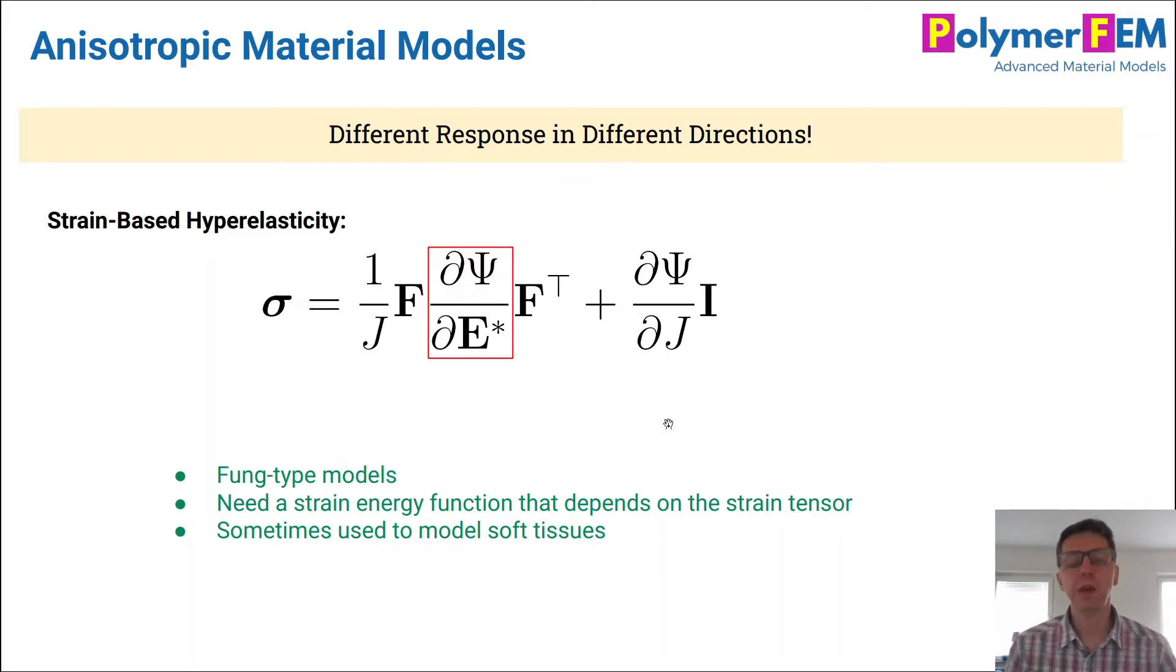Another way to formulate an anisotropic hyperelastic model is to use the form that's shown here. This is a form where the stress is dependent on this partial derivative of the strain energy density, but with respect to the strain itself, the strain tensor. So this is what's used in the Fung type material models. Some people like this and it's used for soft tissue modeling often. I don't usually use this approach.